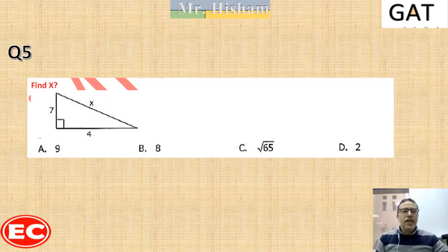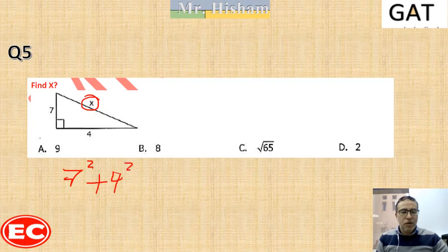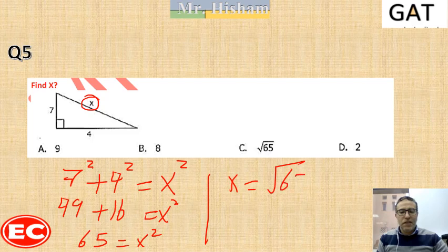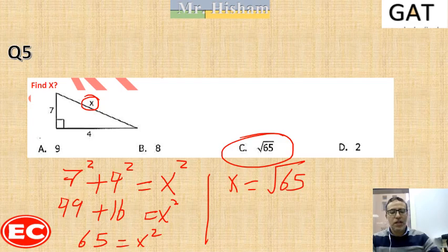Question 5: I have a right angle triangle with the lengths of both legs given, and I am looking for the hypotenuse. So 7 squared plus 4 squared equals X squared, giving 49 plus 16 equals X squared, so 65 equals X squared. Taking the square root, X equals the square root of 65. The correct answer is C.